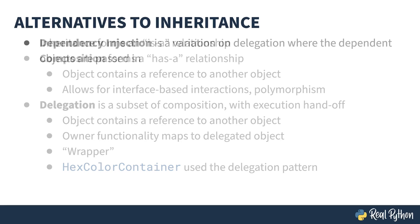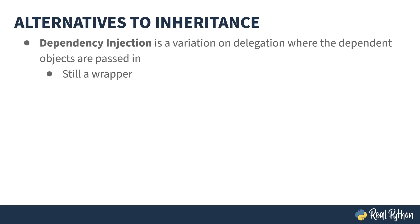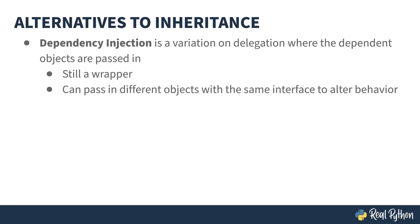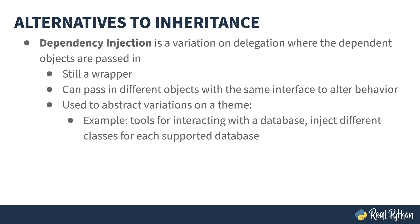An even more specific kind of composition is dependency injection. It's still a wrapper, but this time what you're wrapping is an object that is passed in. Each call gets proxied to the injected object, which means you can change the behavior of the wrapping class by passing in — injecting — a different object. For example, if you've got a class that abstracts database interactions, injecting an object that implements specific database details allows you to code against the generic interface while someone else worries about how it is done. Someone else can then write another injectable object for yet another database, and everything will still work.